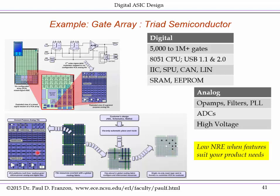Gate arrays don't give you a lot of logic gates and are not terribly suited to large digital products. You'll quite often have a lot of fixed functions available — for example, an 8051 CPU and some USB ports already on the chip. Thus, gate arrays are useful if the vendor provides a gate array pre-made with the features you actually need. If you can't use the provided features, gate arrays tend to be less suitable. Various interfaces such as I2C and CAN for vehicles, as well as SRAM and EEPROM, are available.